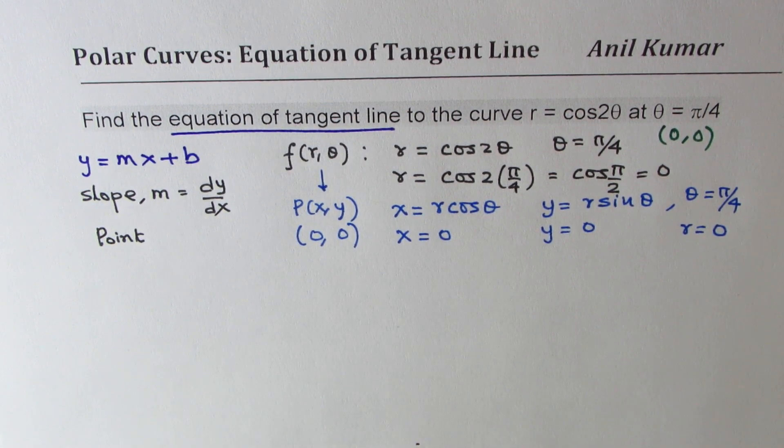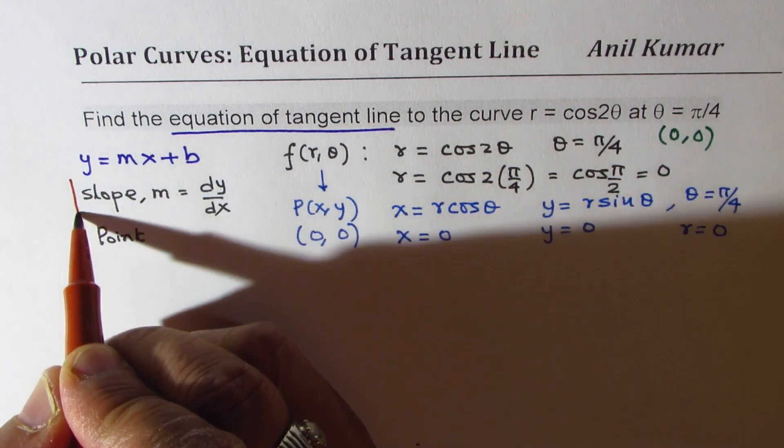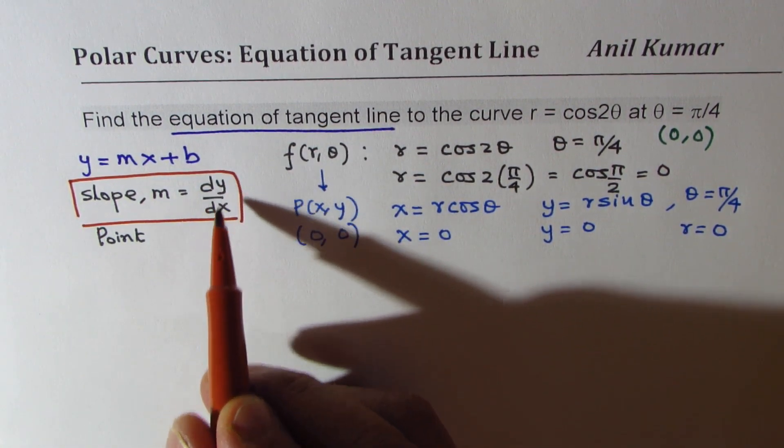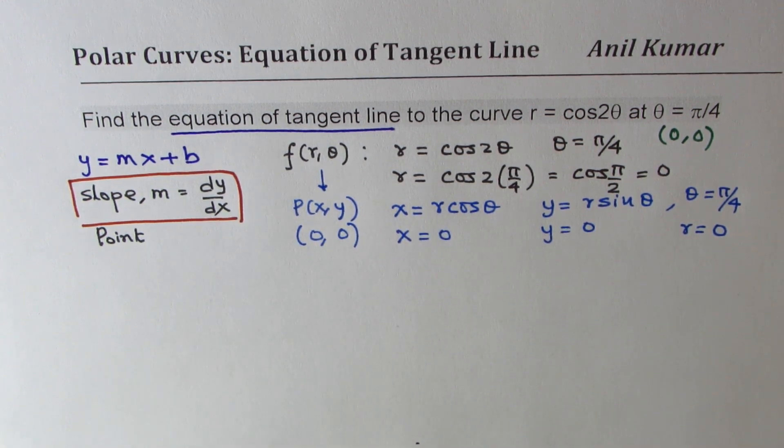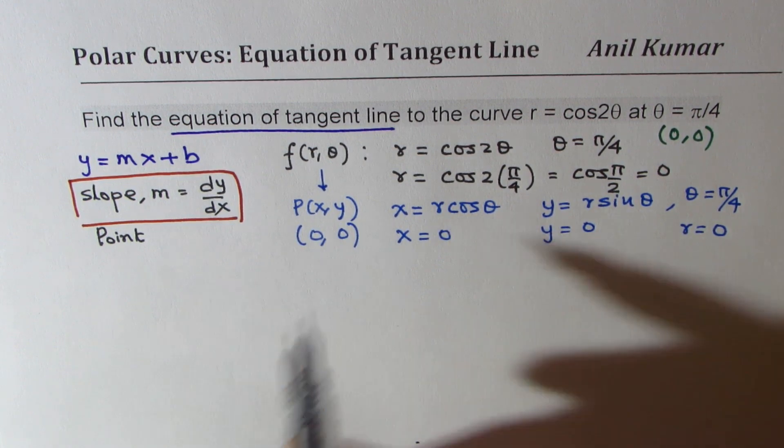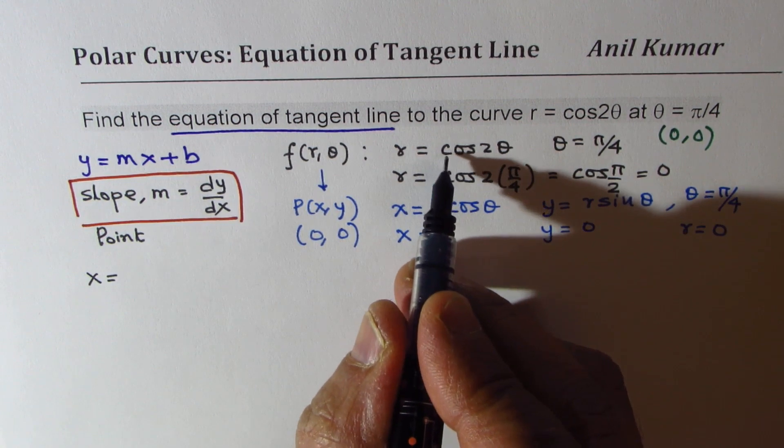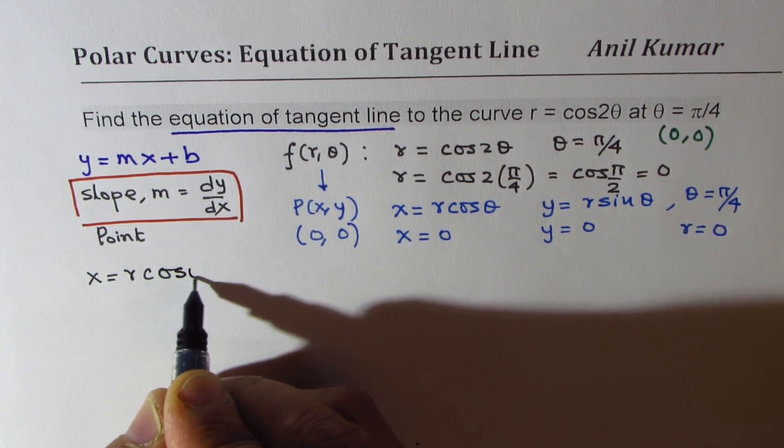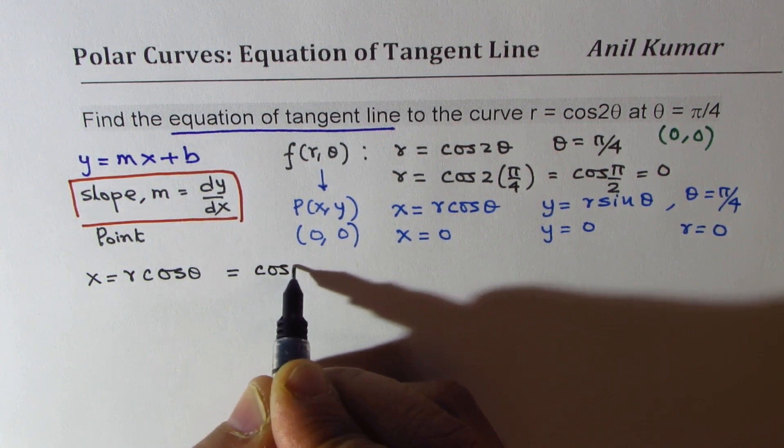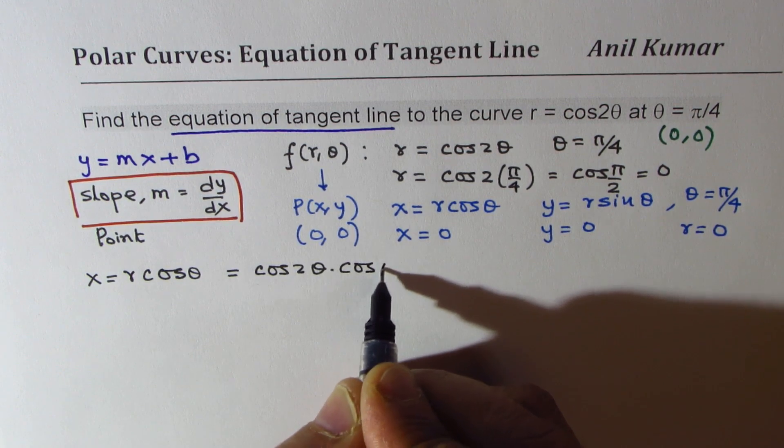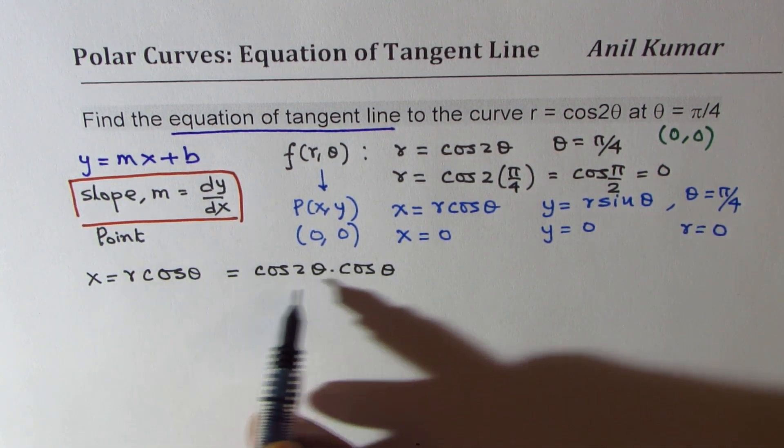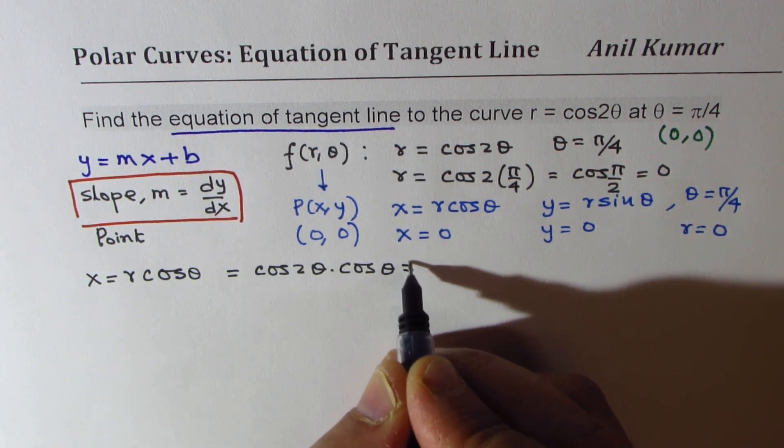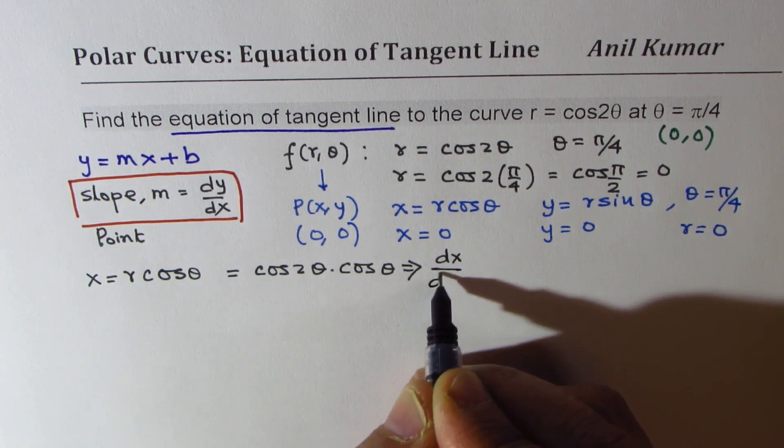Now let's get back to the question of finding slope. If I get the slope, I get this straight line very easily. To find the slope dy dx, we'll rewrite what x is. x equals r cos theta, r is cos 2 theta. So x is cos 2 theta times cos theta. Now if I differentiate this with respect to theta, I'll have to apply the product rule. From here we can find what dx d theta is equal to.